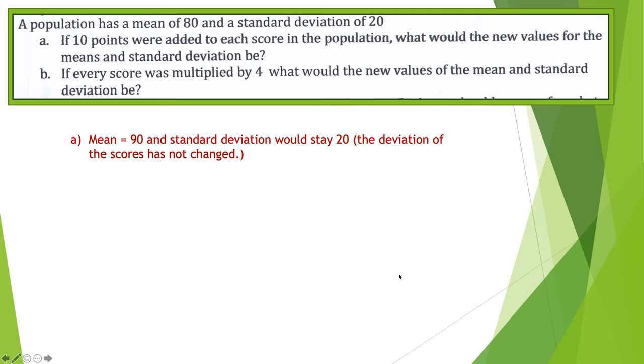Letter B says, if every score was multiplied by 4, what would the new values of the mean and the standard deviation be? Well, if you multiply everything by 4, then the mean is going to go up by a factor of 4 also. So 80 times 4 is 320. Every single score went up by a factor of 4, so the mean will also go up by a factor of 4. Now, the standard deviation would also go up because when you multiply across, the distances are changing by a factor of 4.